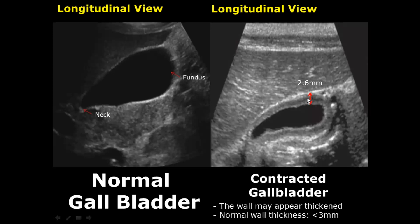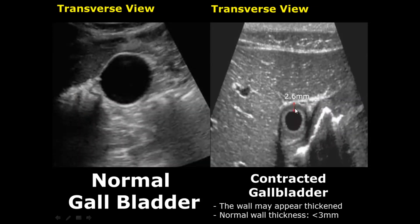This is the appearance of a contracted gallbladder. It occurs when the person has recently eaten and the walls may appear thicker than normal, but as you can see it is less than three millimeters, so it is a normal thickness of the gallbladder wall. Here is a transverse view of a contracted gallbladder; the wall is measuring 2.6 millimeters, which is normal.